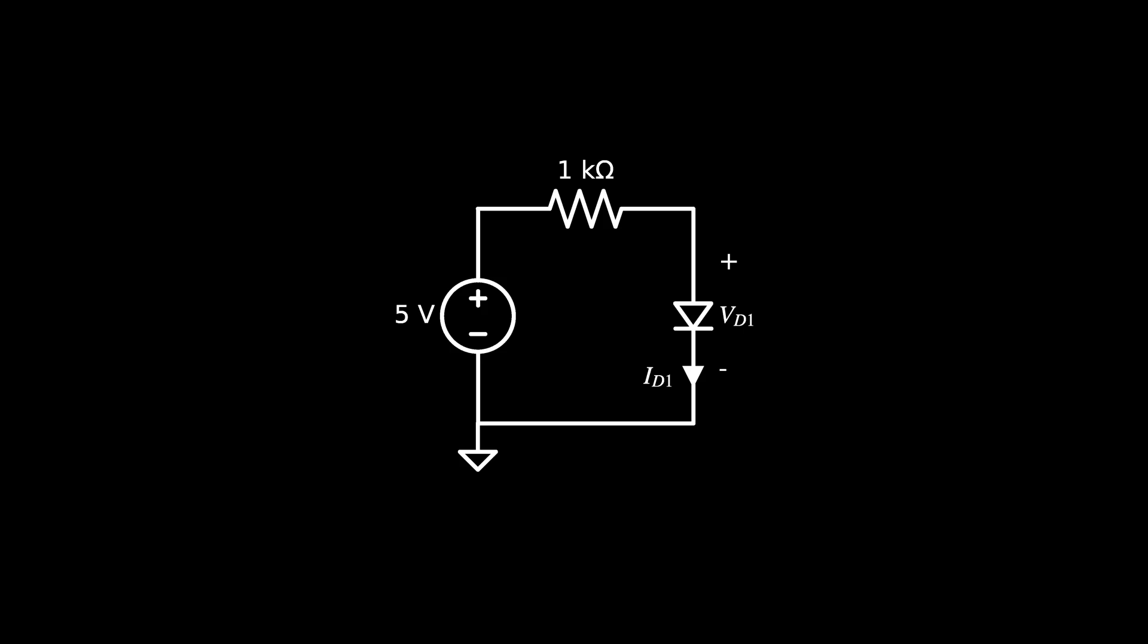So we have an example of the forward bias case. Notice that the diode voltage and current are labeled consistently with what we've used previously. Positive voltage on the anode, current flowing from positive to negative. This changes some signs in our analysis, but we use the same approach.